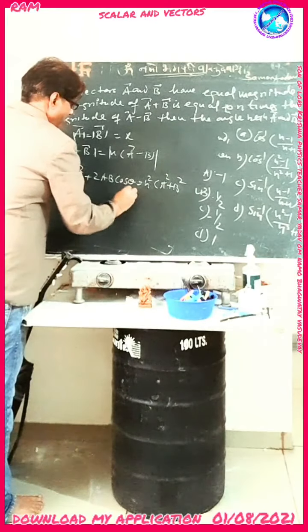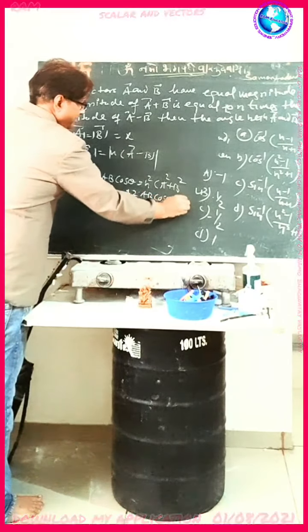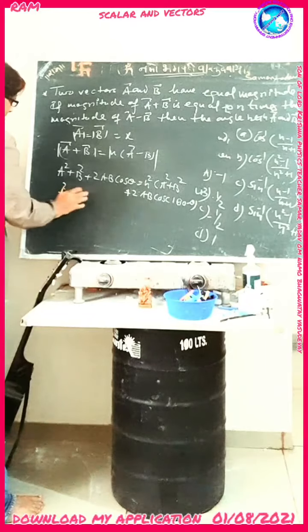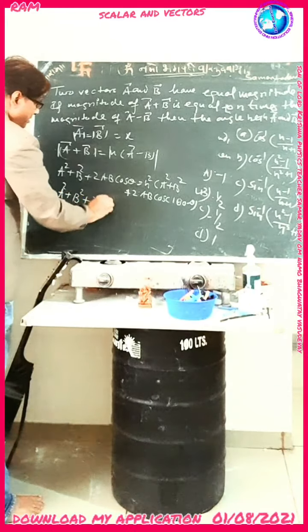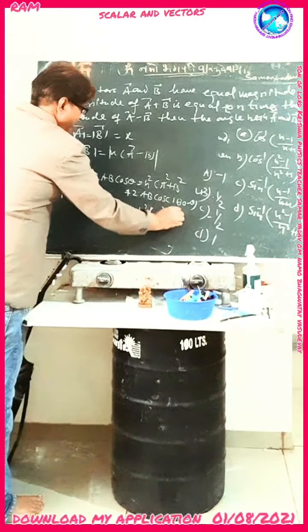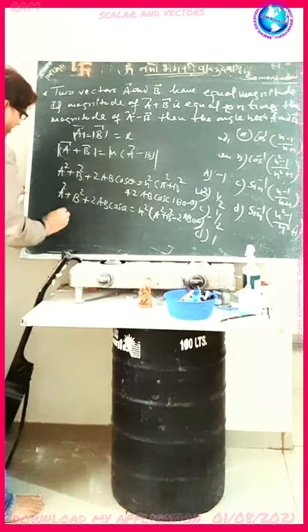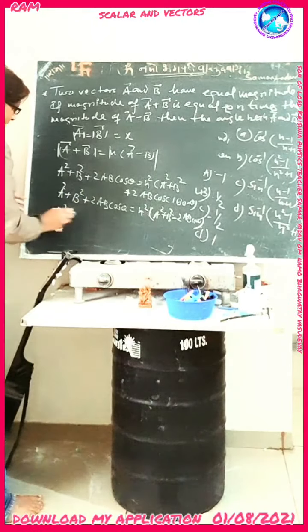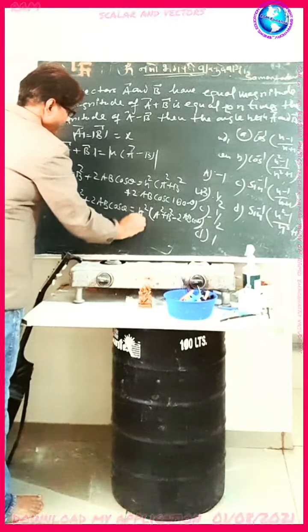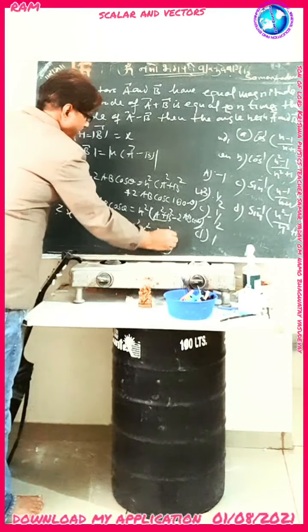Since A equals B equals x, substituting: x squared plus x squared plus 2x squared cos theta equals n squared times x squared plus x squared minus 2x squared cos theta. So 2x squared plus 2x squared cos theta equals n squared times 2x squared minus 2x squared cos theta.